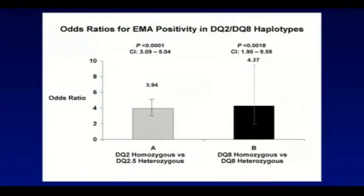Another highlight of the study is shown in this second graph, which demonstrates the odds ratio for EMA positivity in DQ2 and DQ8 haplotypes. Those who are DQ2 homozygous versus those who are DQ2.5 heterozygous had almost a 4-fold odds ratio of being EMA positive with high significance. Similarly, those who were DQ8 homozygous versus those who were DQ8 heterozygous also had almost a 4-fold odds ratio of being EMA positive with high significance.